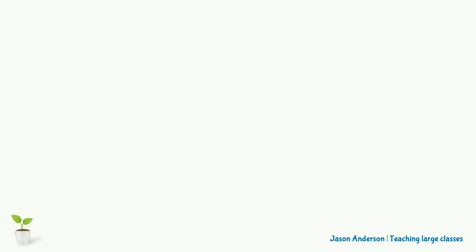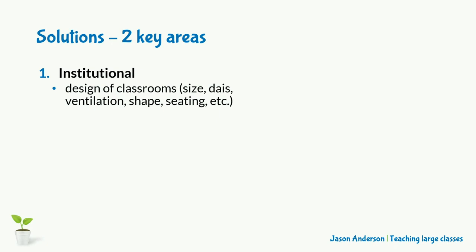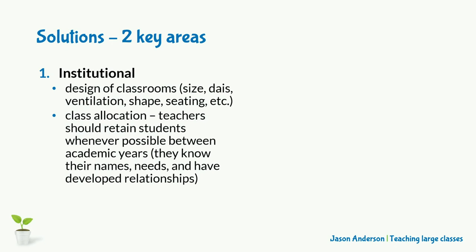Several of the strategies and solutions for the challenges of teaching large classes relate to institutional factors. The first of these is the design of the classrooms — not something that we can usually influence as teachers, but important nonetheless. However, the second is one that some of us can influence: making sure that whenever possible we keep the same class of learners for several years. Given the amount of time it takes to learn their names and needs and build rapport, this is an obvious solution. So whenever possible, try to convince those in charge of organising timetables to maintain this continuity.